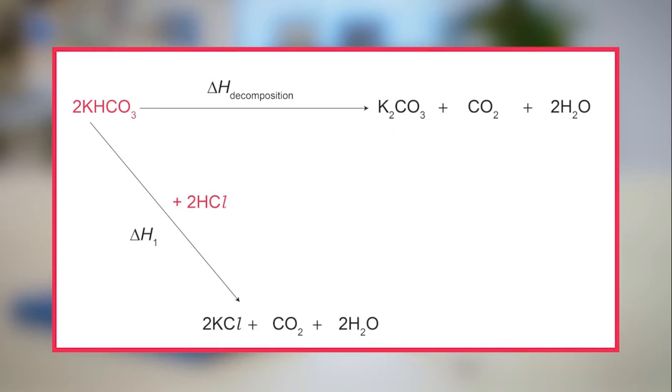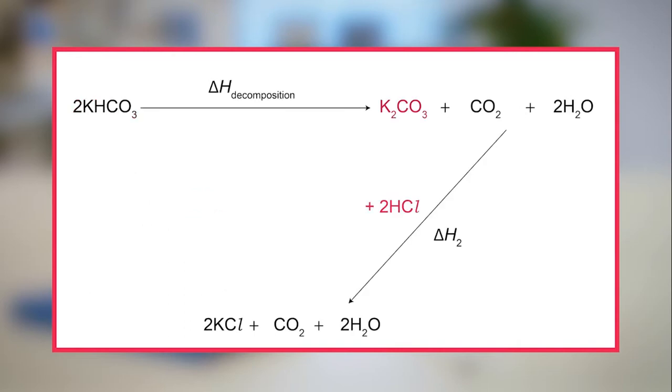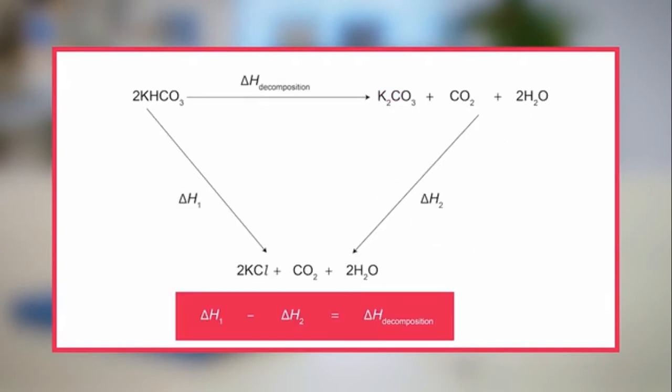First, potassium hydrogen carbonate is reacted with hydrochloric acid. This is labelled delta H1. Then, anhydrous potassium carbonate is reacted with hydrochloric acid. This is labelled delta H2. The enthalpy of decomposition is then found using the data calculated for delta H1 and delta H2.